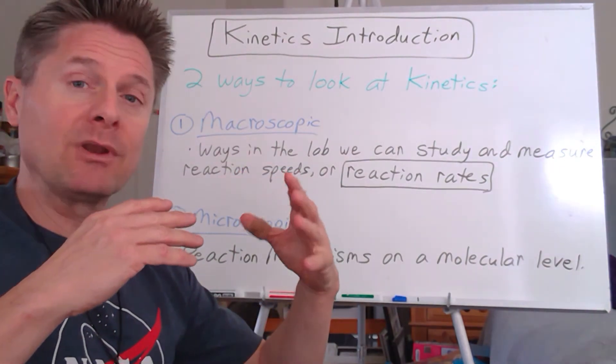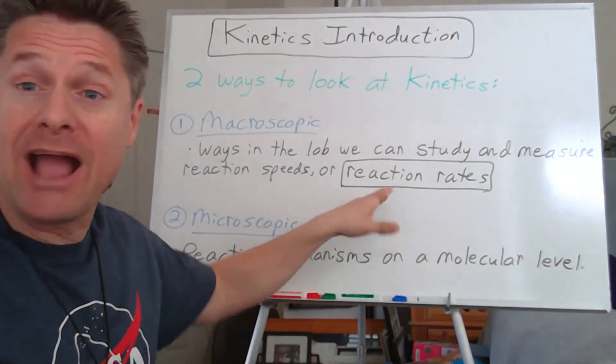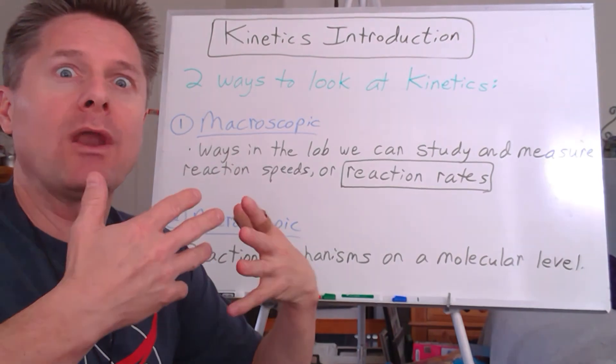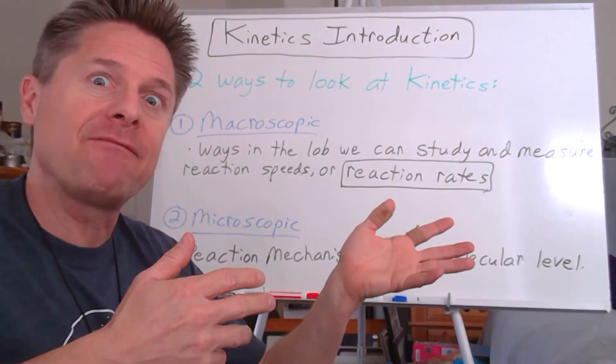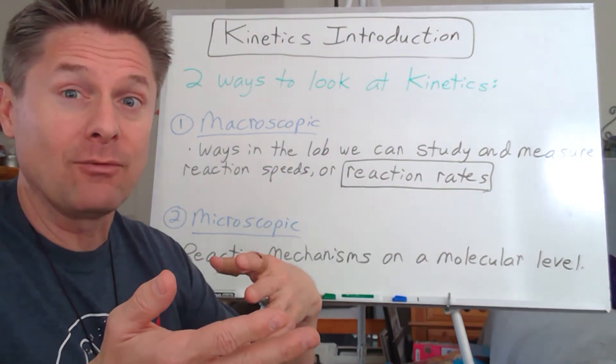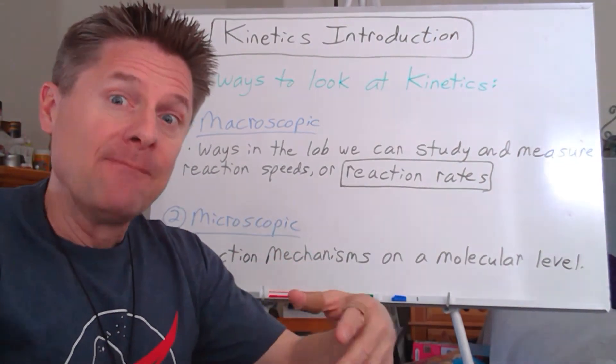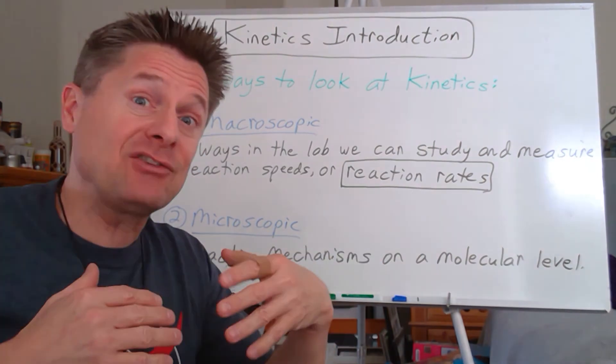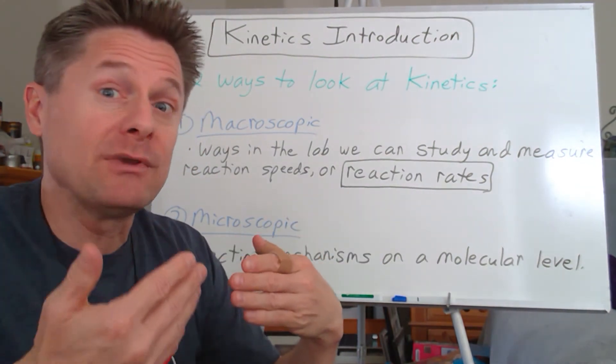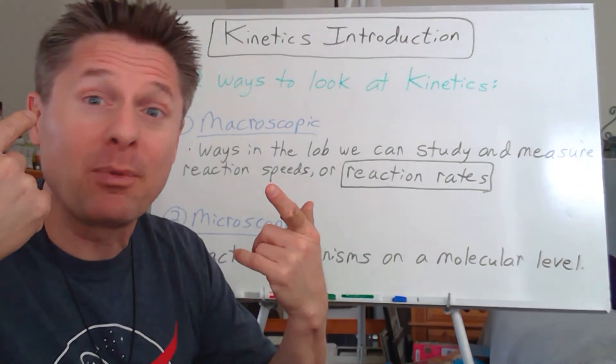We're going to look at the mechanism of a reaction. Maybe we have this overall equation and we can study its reaction rate in lab, but now we want to know: why is that a fast reaction versus why is that a slow reaction? We're going to look at what's actually happening on a molecular level. Maybe this reaction we're looking at is actually a two or three step process that we can't see with our pathetic human eyeballs, but maybe we could theorize.